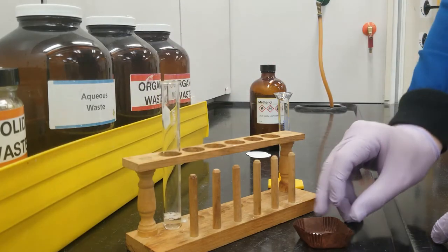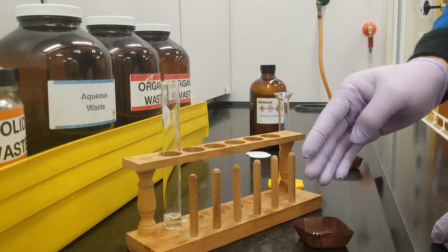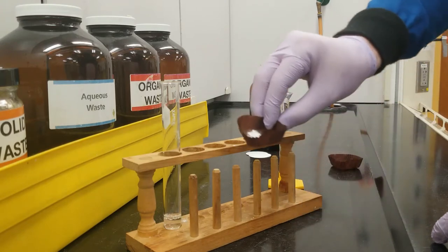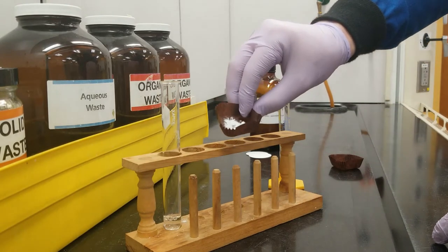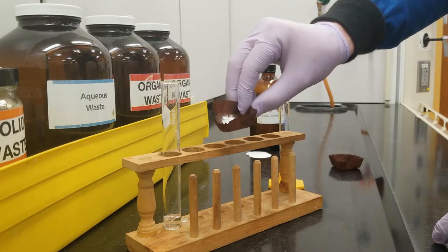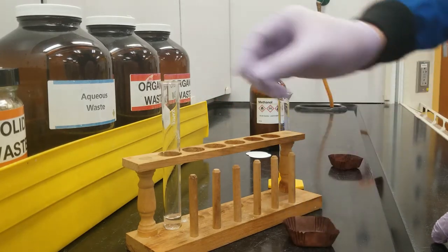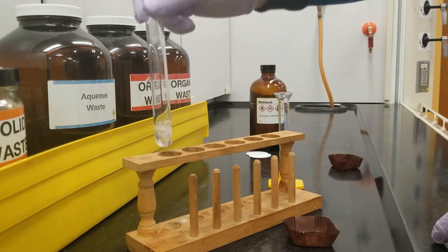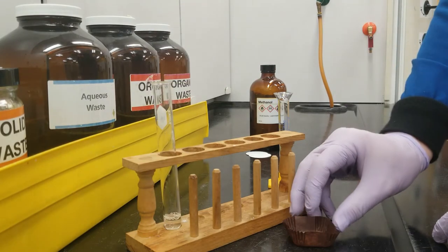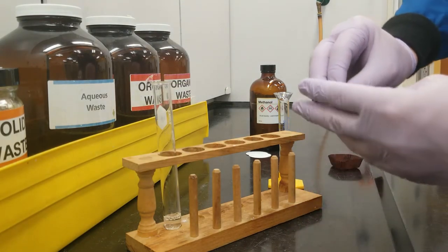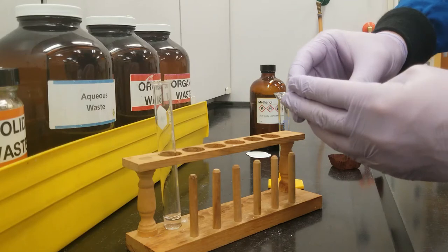So if I dumped this sodium borohydride into a protic solvent, like water, this wouldn't actually react with anything that I wanted to. It would just react with the water. But if I do it in an aprotic solvent like this, it will not react with the methanol, and it will react with the benzophenone that I wanted to.